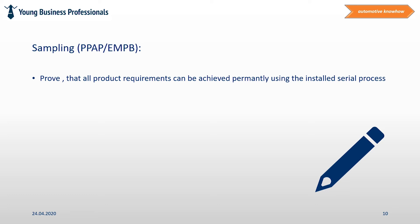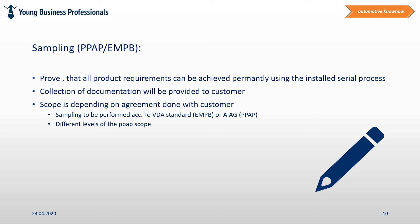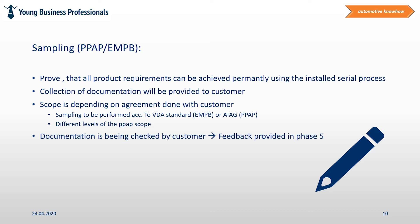Sampling according to PPAP or EMPB. Once the serial production process is installed and approved, the team can proceed with the sampling of the product. This is the approval that all product requirements can be achieved permanently with the installed production process. In order to reach it, a package of documentation will be submitted to the customer. The scope of this documentation package depends on agreements made beforehand — if the project has a smaller scope, the package typically requires less information. Sampling can be performed according to different standards such as the VDA standard or the AIAG standard. We will provide further details about these different sampling levels in further videos on the channel. After the customer receives the documentation, it is essentially their job to provide feedback, which typically happens in Phase 5 of the project.